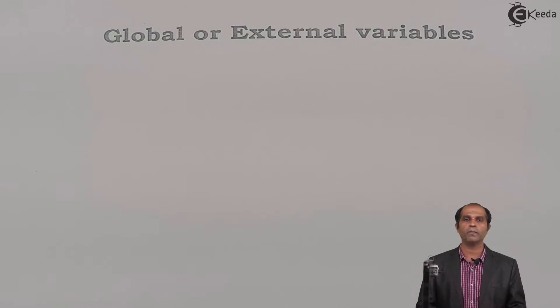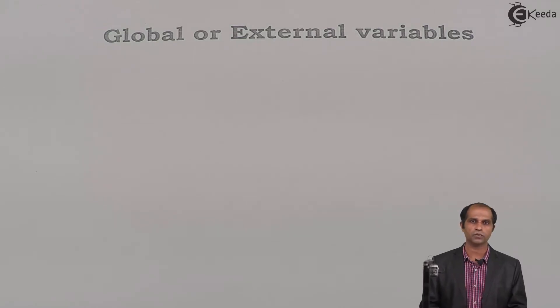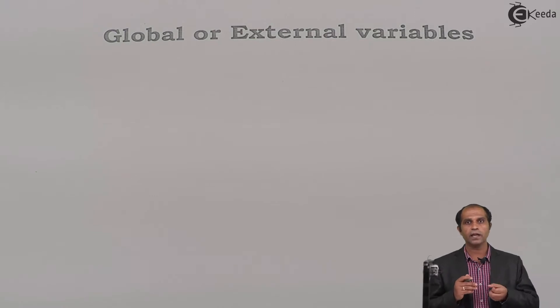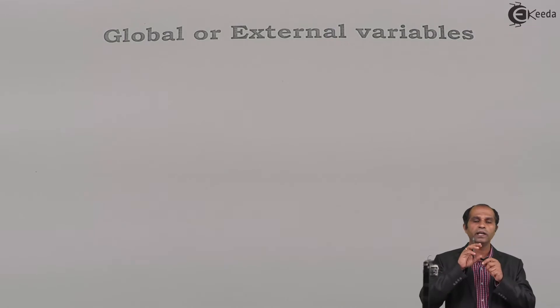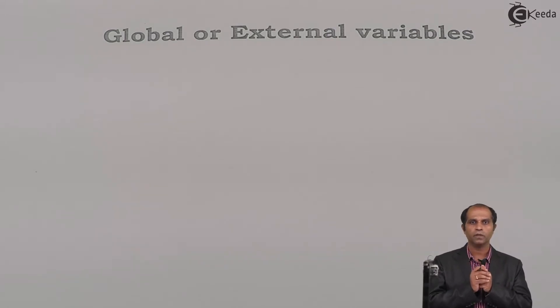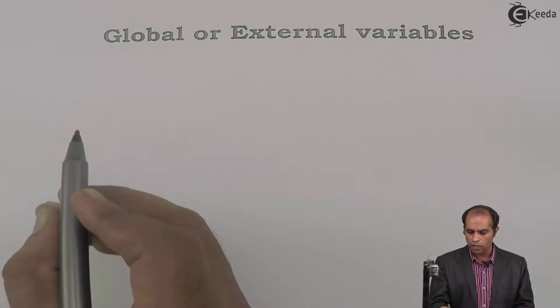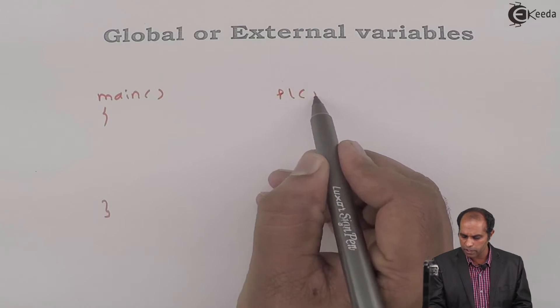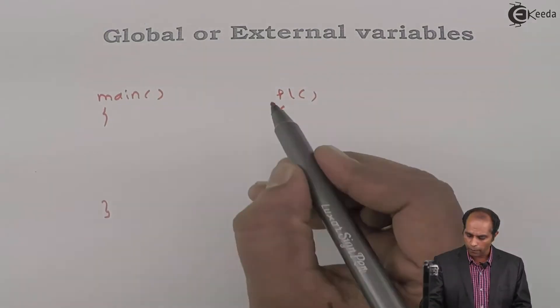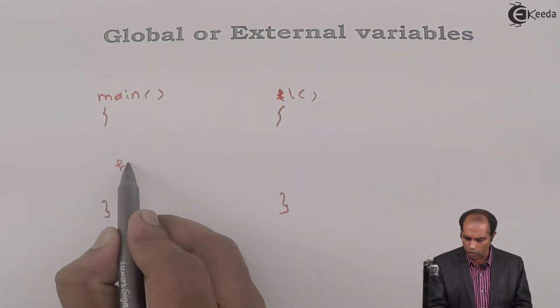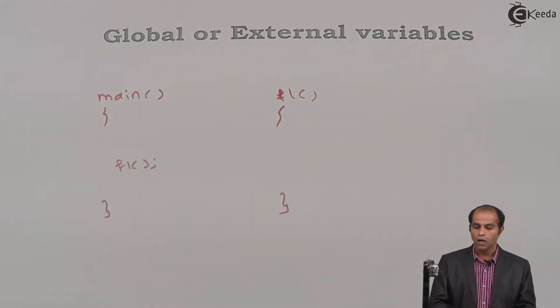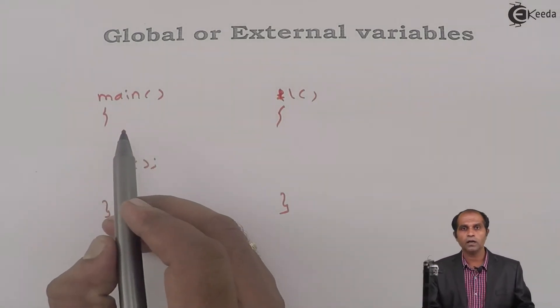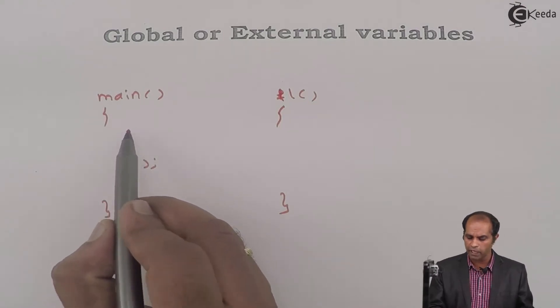Let's deal with the second storage class of memory type, that is the global or external storage class, where the keyword extern will be used. To understand when and why we identify a variable as a global variable, let's take a simple example. Assume that I have a main function and a function f1, and I want to declare a variable that will be used by main as well as by f1.